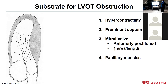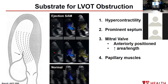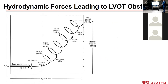What are the determinants of obstruction? Hypercontractility from the mutations, a prominent septum, the mitral valve, and papillary muscles — which in these patients are located anteriorly, dragging the coaptation point forward. In systole, blood flow is redirected by the prominent septum, which catches the valve from behind and drags it into the outflow tract. After septal contact, that narrow orifice causes a pressure gradient between the LV and aorta, which pushes the valve further against the septum, narrowing the orifice — the gradient gets worse and worse. This produces the classical dagger-shaped continuous-wave Doppler signal.